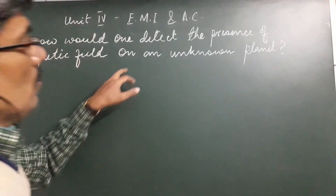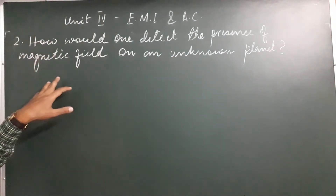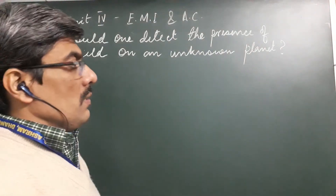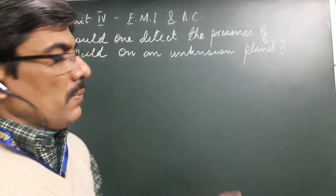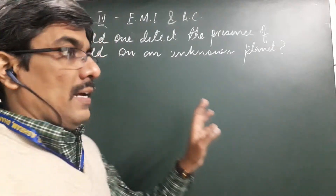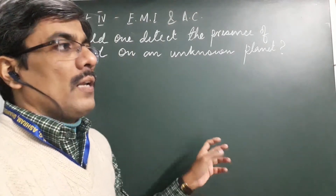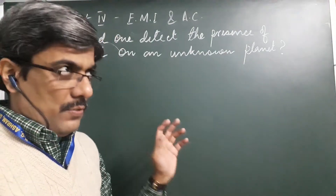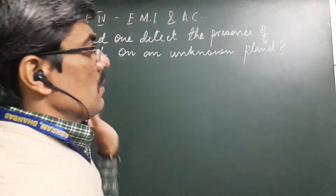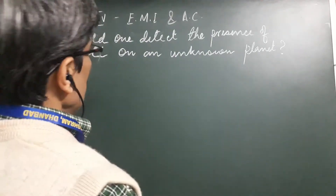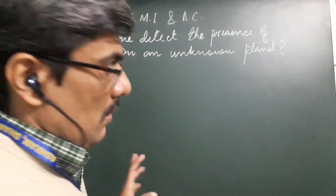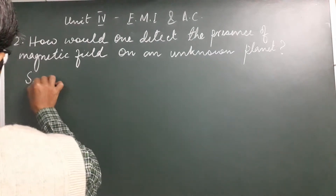How would one detect the presence of magnetic field on an unknown planet? Suppose you happen to land on a planet about which you know nothing. You wish to know whether this planet has a magnetic field like the one we dwell in. So how do you use the concepts of physics to determine whether the planet has a magnetic field or not?